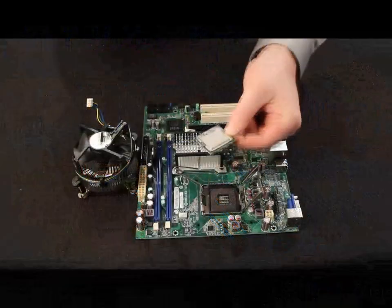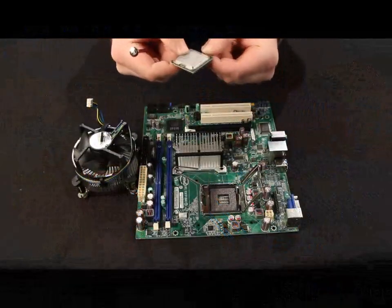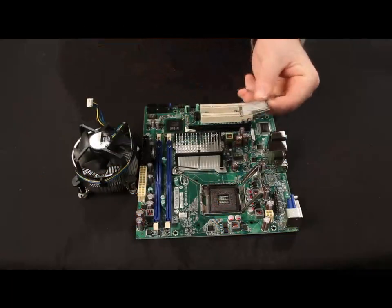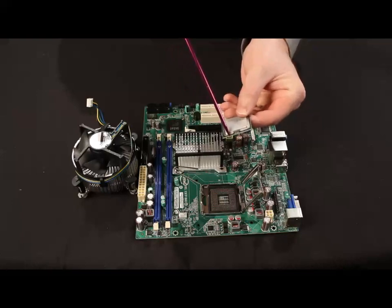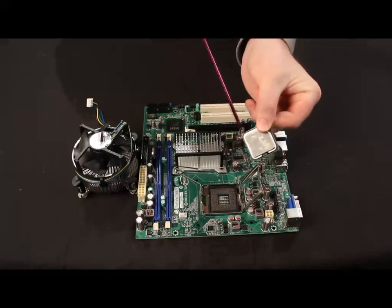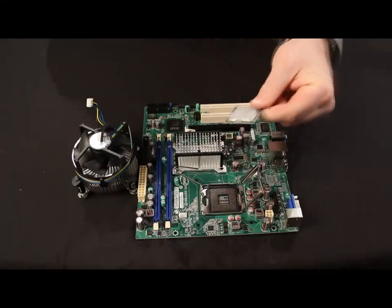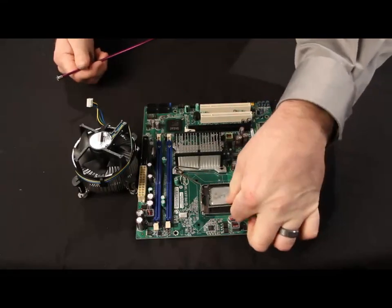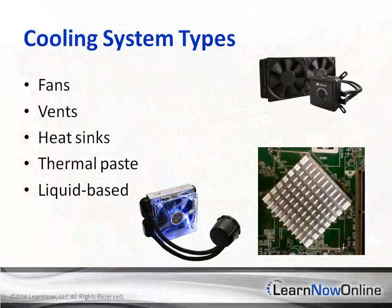Next we will take a look at the different CPU sockets, cache memory, CPU operational characteristics, CPU selection factors, cooling system types, and cooling system selection factors.